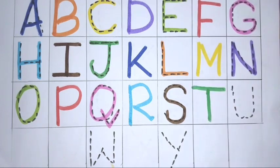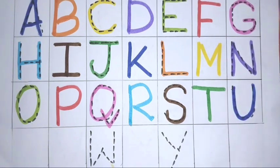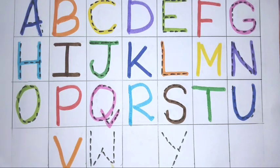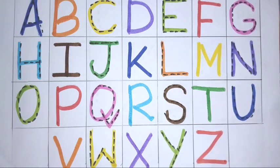S for sunlight, T for time, U for unicorn, V for van, W for watch, X for x-ray, Y for yellow, Z for zebra.